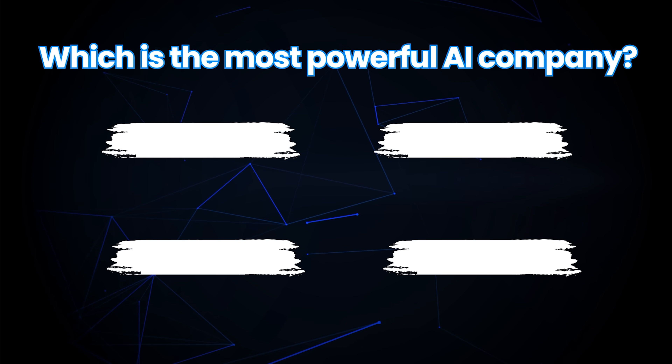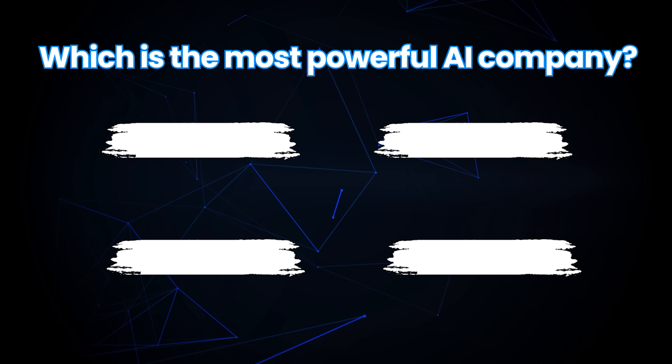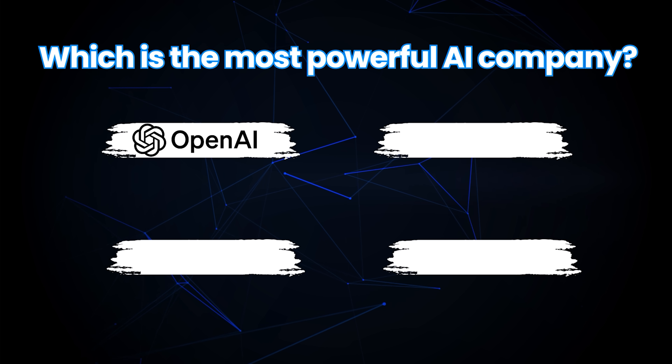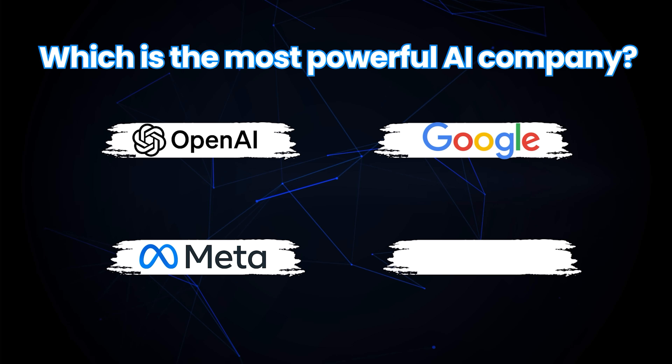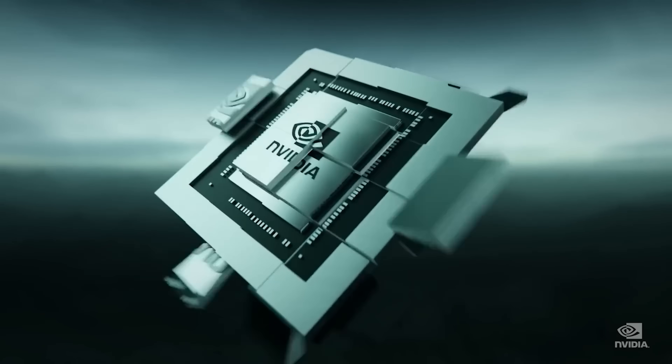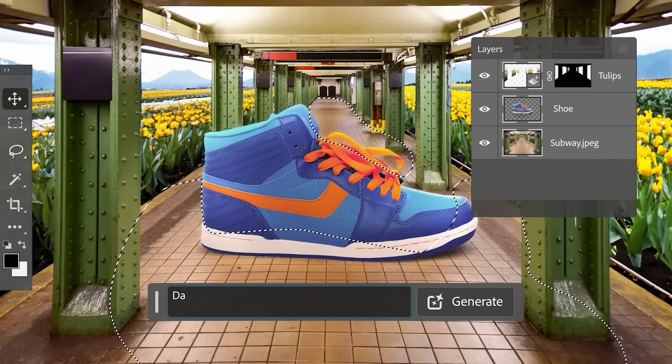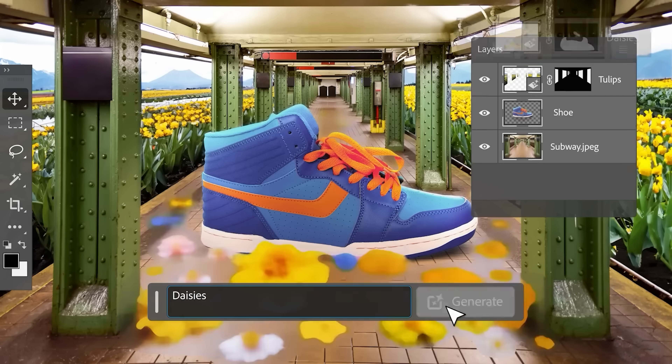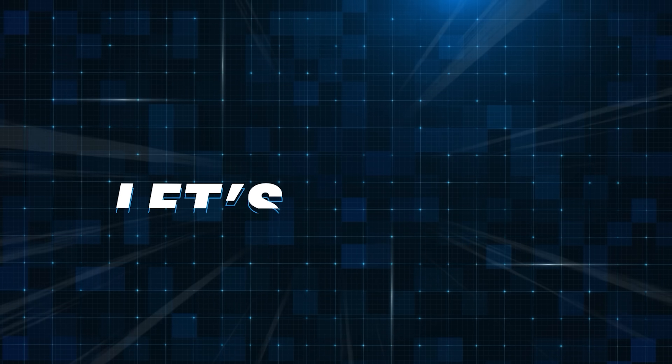Which of these is the most powerful AI company? Is it A. OpenAI, B. Google, C. Meta, or D. None of these? Many people argue it's none of these. All of these companies have done a great job at building foundational AI models, but they rely on NVIDIA's GPUs to train them. None of this generative AI magic would be possible if NVIDIA did not exist. Today, I want to show you how you can learn AI from NVIDIA and get certified by them.